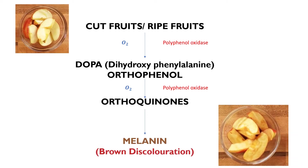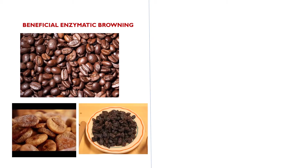The rate of enzymatic browning is reflected by the amount of active polyphenol oxidases present in the food. Examples of beneficial enzymatic browning include developed colour and flavour in coffee, cocoa beans, tea, and dried fruits like figs and raisins.